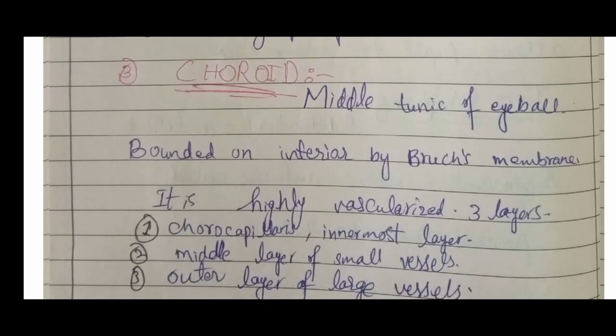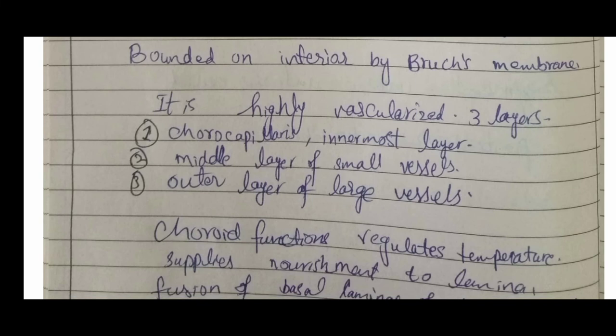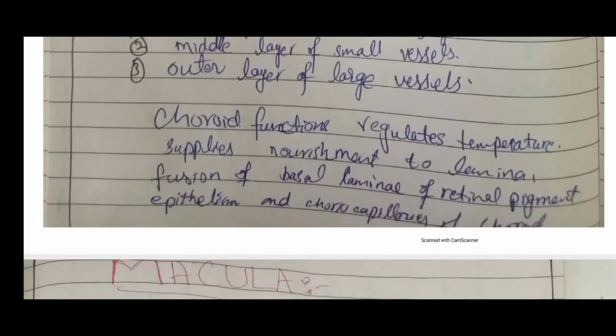The choroid is the middle tunic of the eyeball, bounded anteriorly by Bruch's membrane. It is highly vascularized and composed of three layers from inner to outer: the choriocapillaris (innermost), a middle layer of small vessels, and an outer layer of large blood vessels. The choroid's function is to regulate temperature and supply nourishment to the outer layers of the retinal pigment epithelium, cone cells, and rod cells.